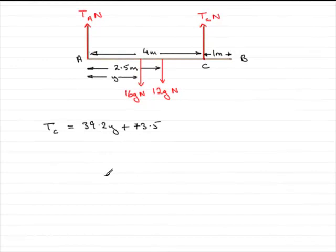Now this part of the question, we are told that the tension at C must not exceed 98 Newtons, otherwise the rope here will break. So we know that the tension at C must be less than or equal to 98. If it exceeds 98, that rope will break.